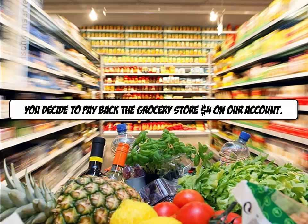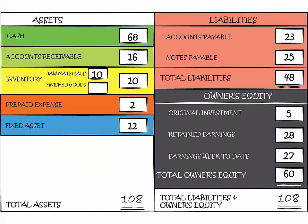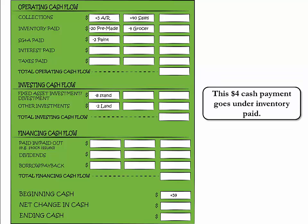Since you made a healthy profit, you decide to pay off your account at the grocery store. You take $4 out of cash to pay the grocer and reduce accounts payable by $4. Cash went down from $72 to $68 and accounts payable was reduced from $27 to $23. On the cash flow statement, we add minus $4 accounts payable to inventory paid.